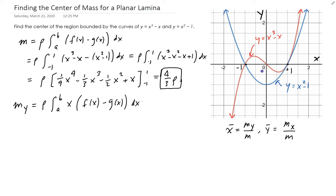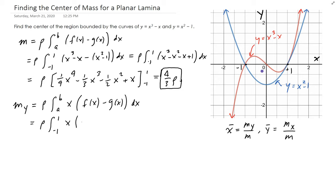We have the density times the integral. Our bounded region is between x equals negative one and one. It's going to be x times f of x minus g of x, which is what we had from above.